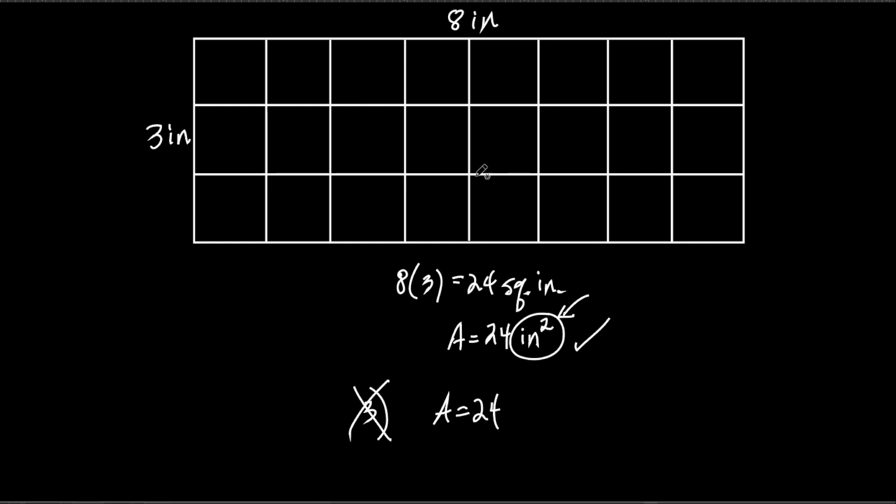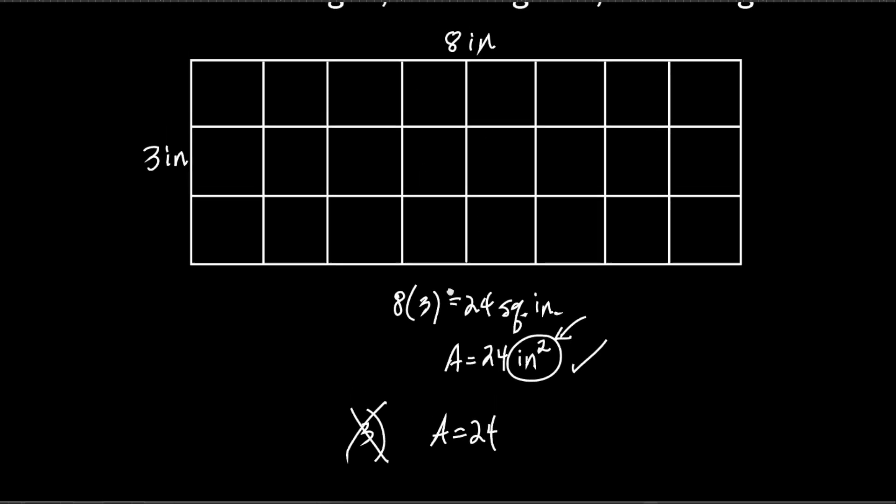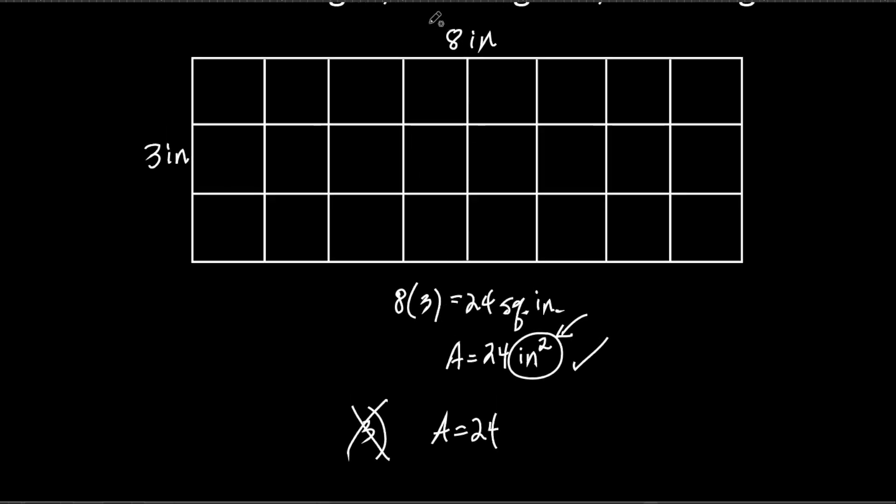So somebody said this already, but I wanted to wait until we did all this. What would we call this side right here? It's eight inches, but we could call this side something and this side something. Somebody said it earlier. Length. We'll just use L for length, put it right there. So we could put length, and what would we call this one if we call this one the length? Call it the width. To tell you the truth, it doesn't matter which one you call length. It doesn't matter which one you call width. You could call it height if you want to. If you want to call it height, you could call it height as well.